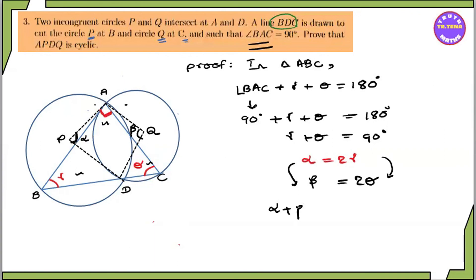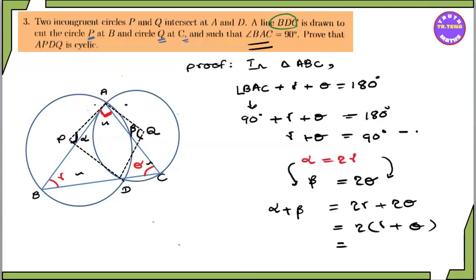Alpha plus theta equals theta. Now it goes to gamma plus two theta. Now we have to consider gamma plus theta. Gamma plus theta is 90, so gamma plus theta equals 90 degrees.